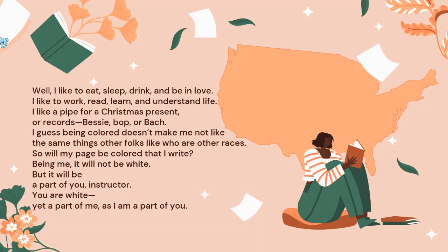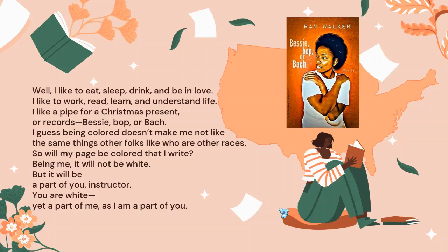Now: 'I'm a human being, I'm a typical American. I like to eat, sleep, drink, and be in love' — everything any human being may do. 'I like to work, read, learn, and understand life. I like a pipe for a Christmas present, or records — Bessie, Bop, or Bach.' Interestingly, Bessie, Bop, or Bach is the name of a short story collection by Rand Walker, in which he talks about different locations, different Afro-American societies and cultures. So Hughes also names a prominent work of literature produced by a black person about the black community.